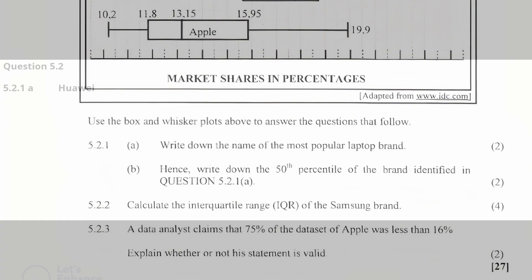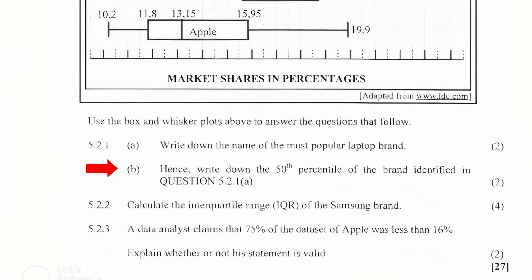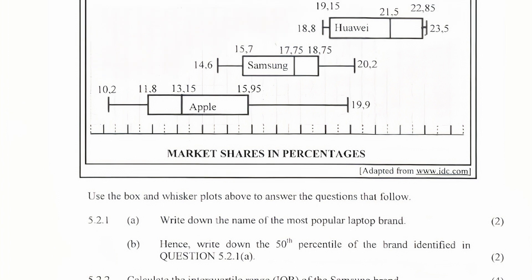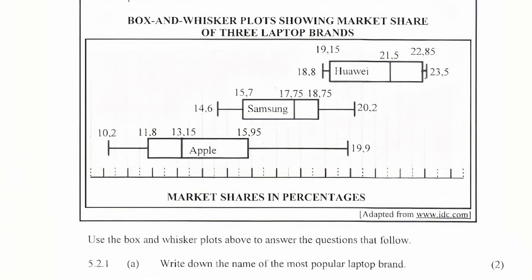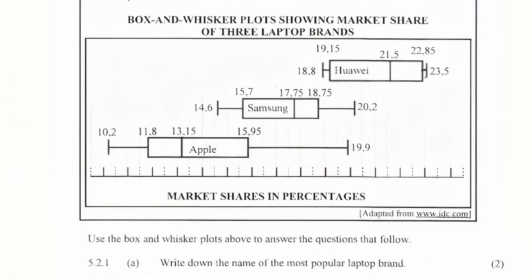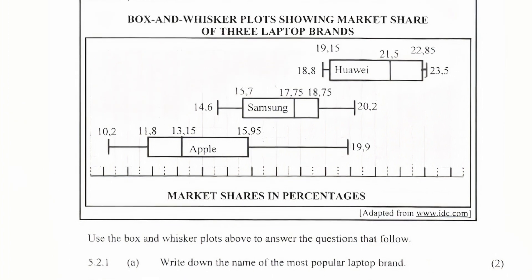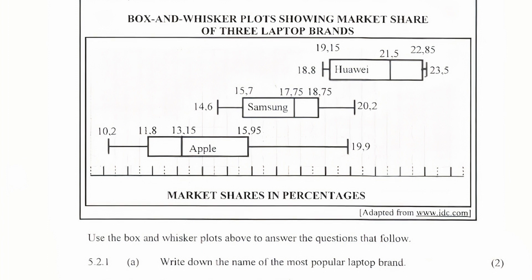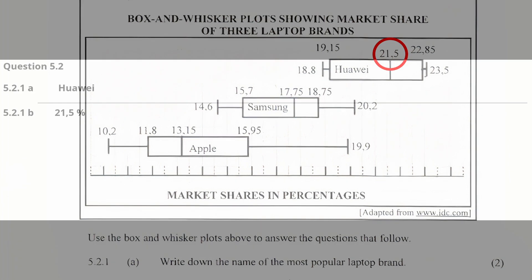Question 5.2.1b: Hence, write down the 50th percentile of the brand identified in question 5.2.1a. The mean market share is also known as the 50th percentile, so the 50th percentile for Highway is 21.5%.